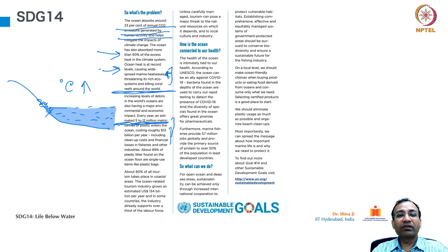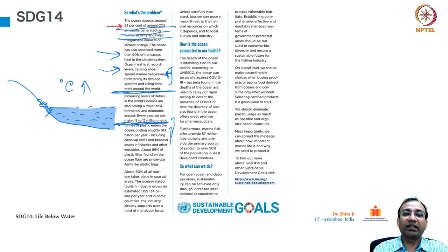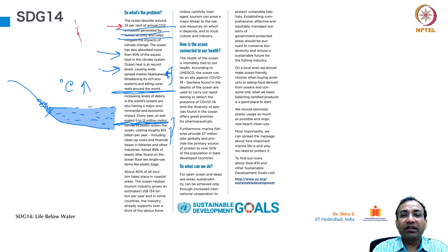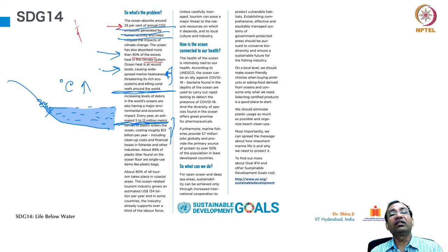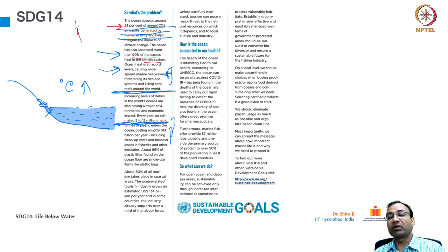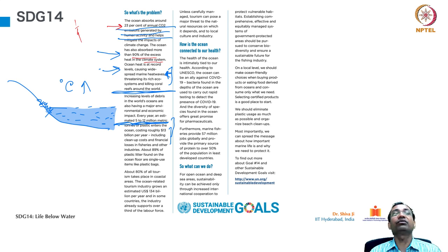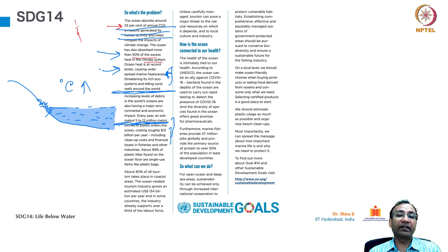What is the problem? The ocean absorbs around 23% of annual CO2 emissions generated by human activity — close to a quarter — and helps mitigate the impacts of climate change. The ocean has also absorbed more than 90% of the excess heat in the climate system. So oceans are actually heat absorbers also. Oceans are the cushions, the buffer zones, which are allowing our atmosphere to not get heated so much.